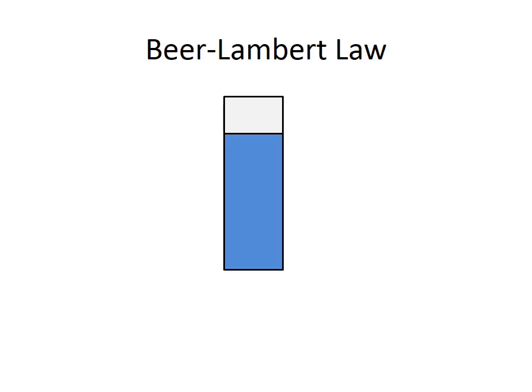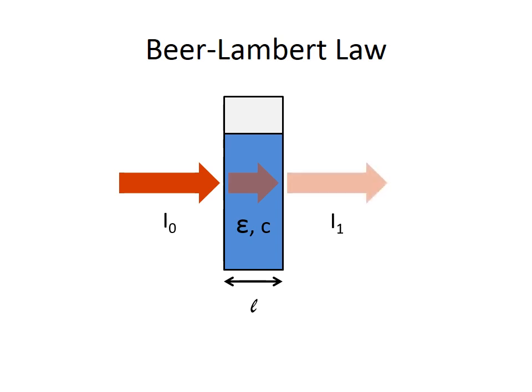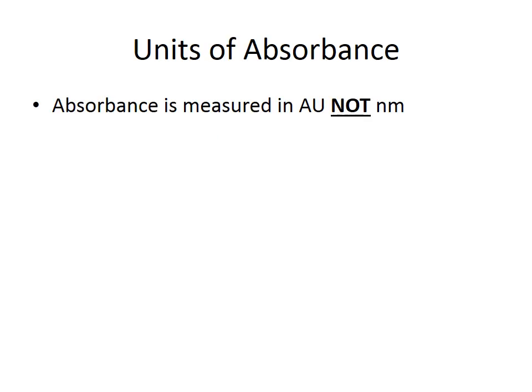So how does a spectrophotometer determine absorbance? A beam of light is fired at a sample with a known intensity I₀. The concentration, molar absorption coefficient, and path length of the sample cause a decrease in the amount of light that comes out the other side, which is I₁. It is this change that gives us a representation of absorbance — the absorbance equals the log of the intensity of light entering the sample divided by the intensity of light leaving, and this is dependent on εCL.